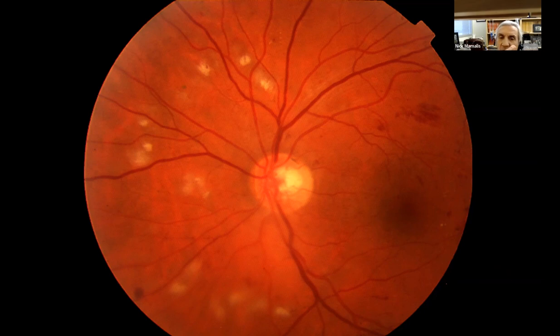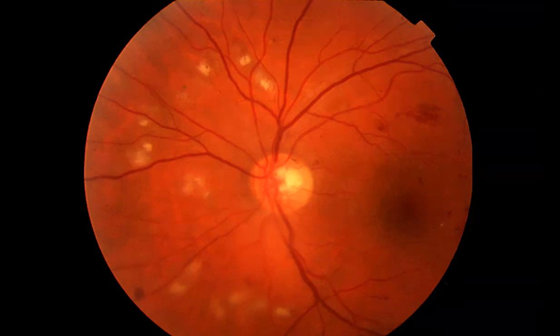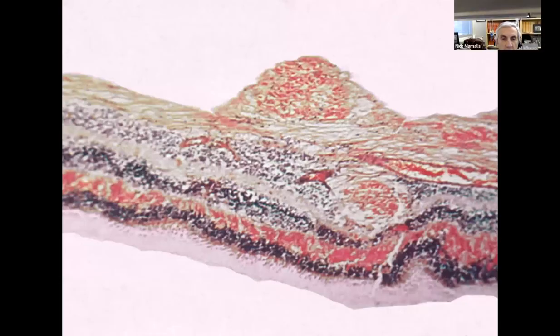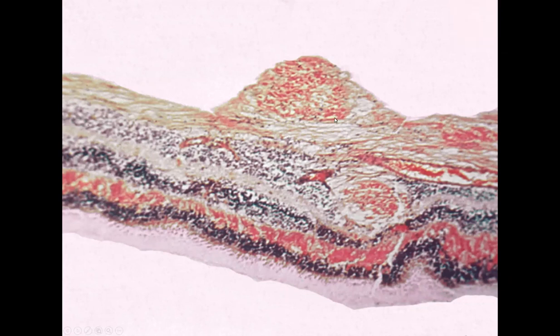Marshall, what are cotton wool spots? Cotton wool spots are basically a small infarct of the RNFL. What you actually see is a focal swelling of the RNFL. Looking right here at the surface of the retina, these are ischemic, swollen neurofiber layer ganglion cells — those are the cotton wool spots.